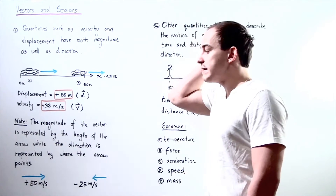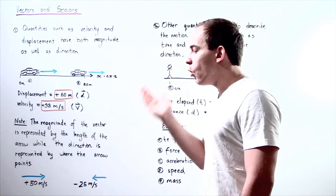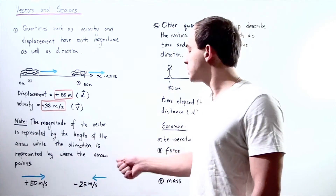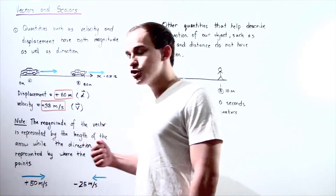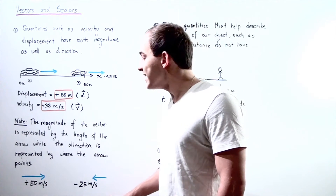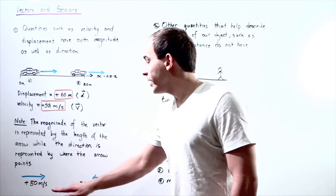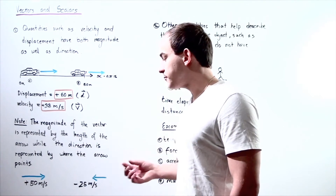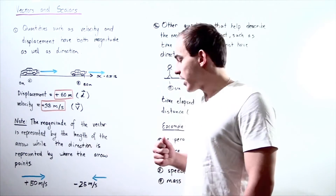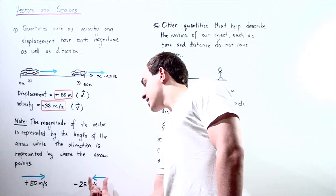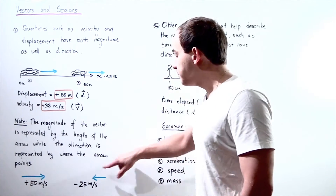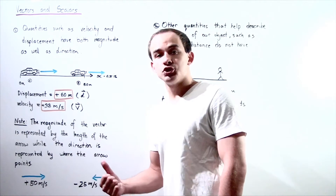Let's look at another example with two moving objects. One object is moving in the positive direction along the x-axis and the second is moving in the negative direction. Notice that object 1 is moving with twice as much speed, so its velocity arrow points in the positive direction. Object 2 points in the opposite direction and, because it has half the velocity magnitude, its arrow is twice as short.